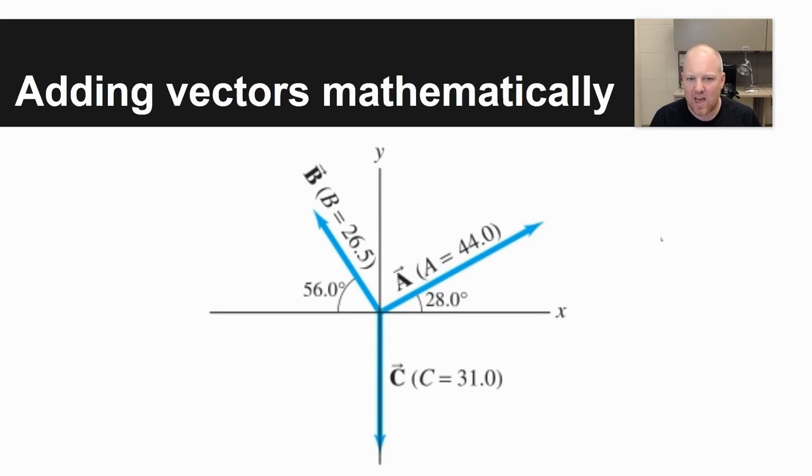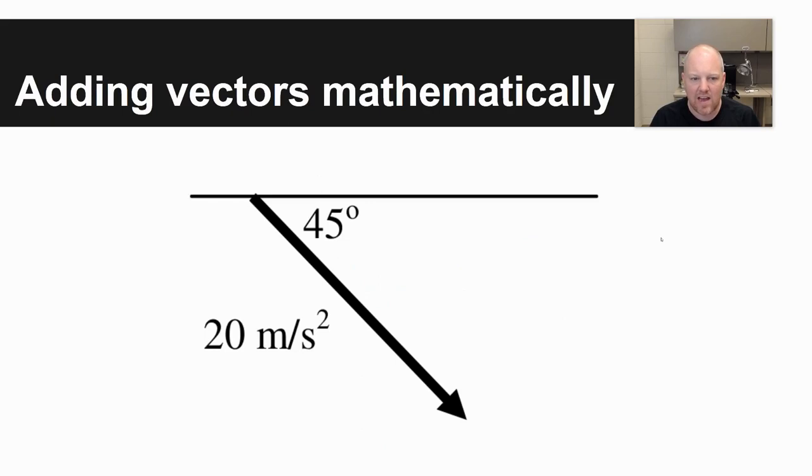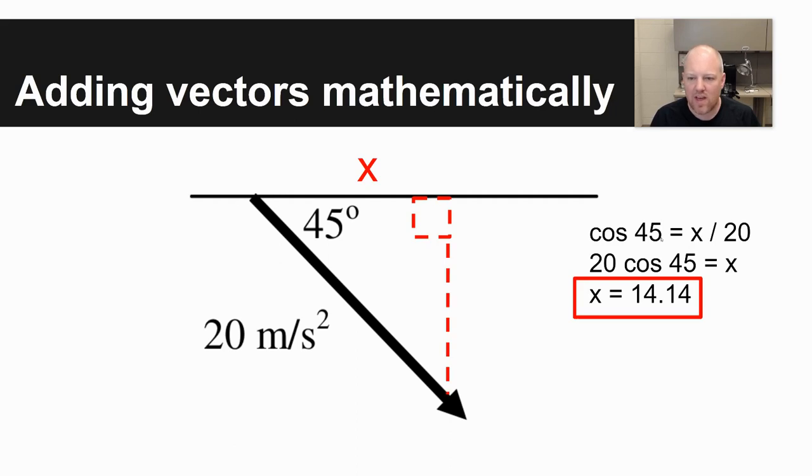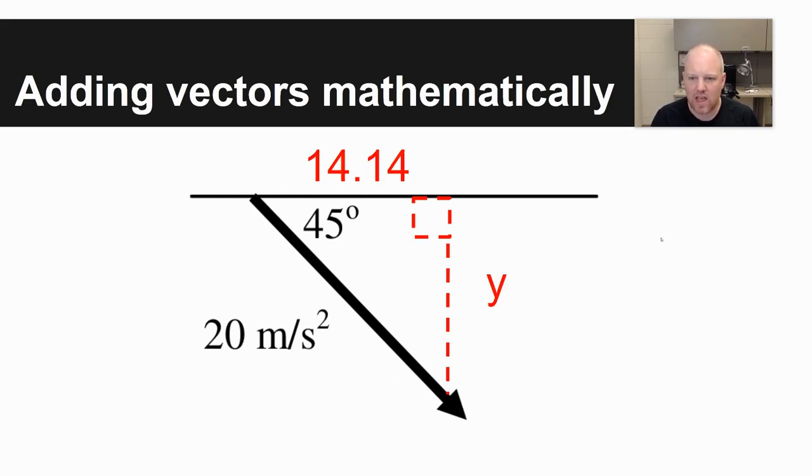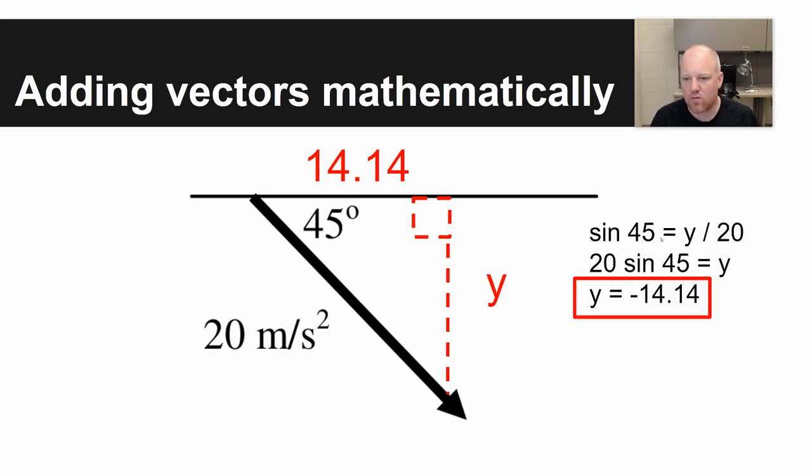The more difficult concept with adding vectors, I think at least, is adding vectors mathematically. Adding vectors mathematically, this is where you need your trigonometry background. And so what you're going to have to do is take a given vector, you need to be given a magnitude and a direction, and what you're going to do is resolve that into x and y components. So if you're given an angle, if you're given your hypotenuse of this imaginary triangle, pretend that each of your vectors is a triangle, you can resolve it to your x component and your y components. I'd notice that the y component here has a negative value because you're moving down. The x has a positive value because you're moving towards the right.